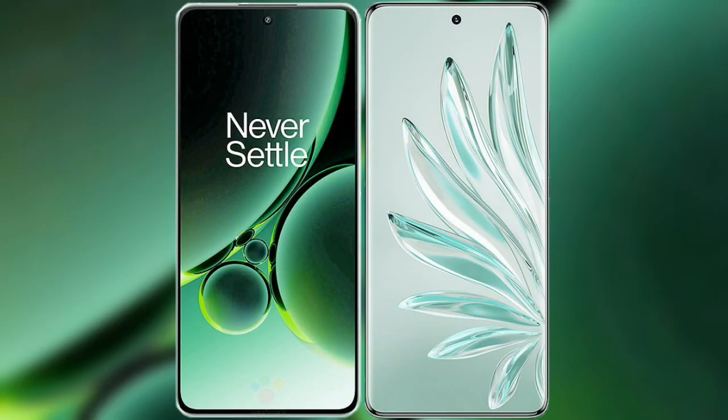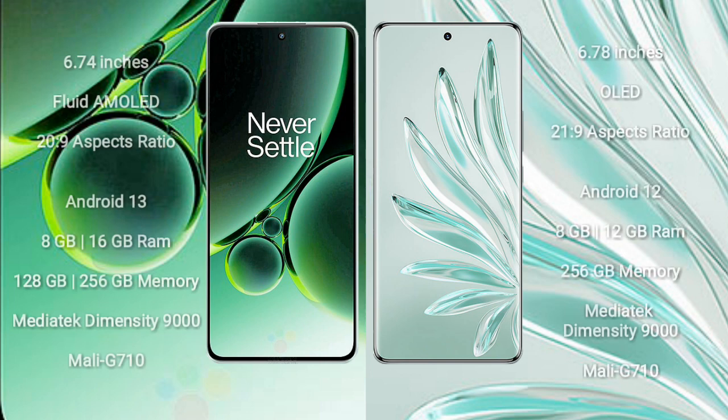I will compare the new OnePlus Nord 3 with Honor 70 Pro Plus. OnePlus Nord 3 comes with a 6.74-inch flat AMOLED display and a 20:9 aspect ratio. Honor 70 Pro Plus has a 6.78-inch OLED display and a 21:9 aspect ratio.